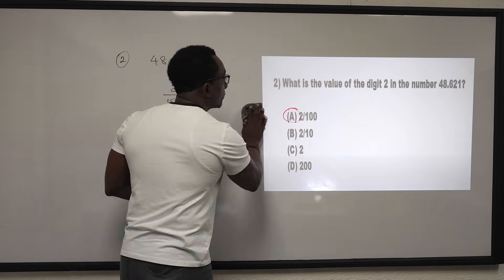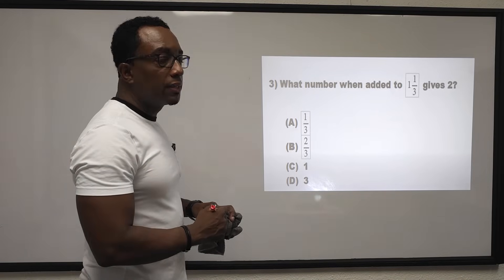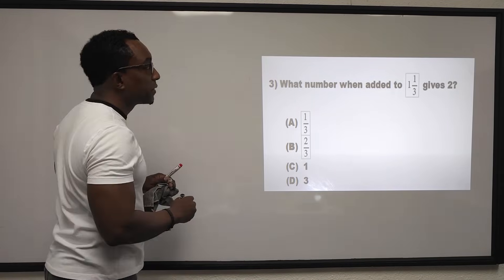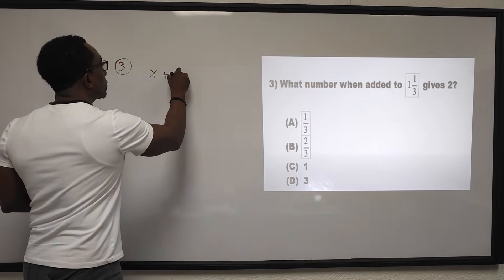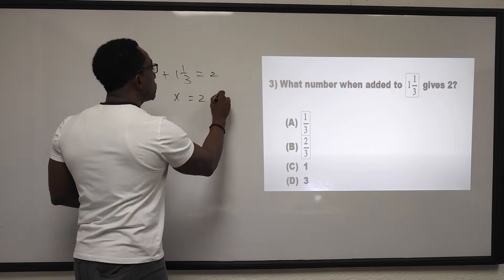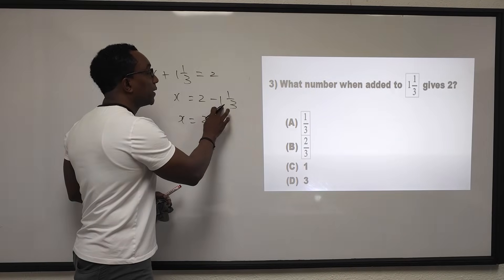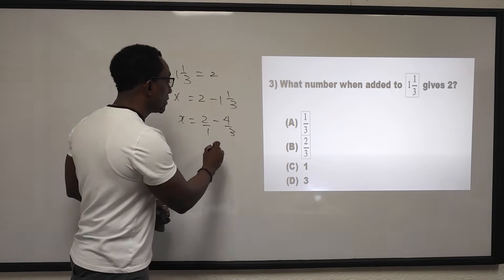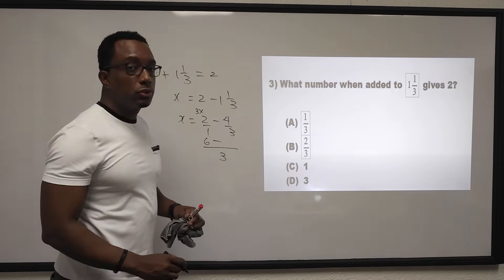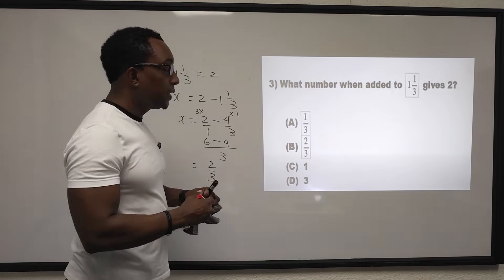Let's look at question 3: what number when added to 1 and a third gives 2? Let that number be x, so x plus 1 and a third equals 2. To find x: x equals 2 subtract 1 and a third. Converting to an improper fraction: 3 by 1 is 3, plus 1 is 4 over 3. Finding common denominator 3: 6 minus 4 gives 2 over 3. The answer is B.